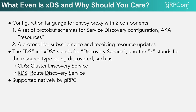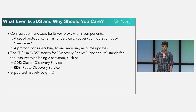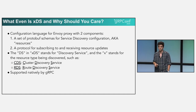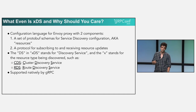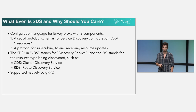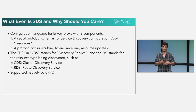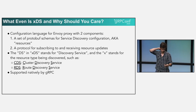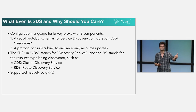CDS stands for cluster discovery service, and RDS is route discovery service. XDS is supported natively by gRPC, meaning a gRPC client can directly talk to the XDS control plane and will behave exactly like Envoy, except without having to have a proxy in the middle. You basically configure both Envoy and gRPC to talk to the same XDS control plane.